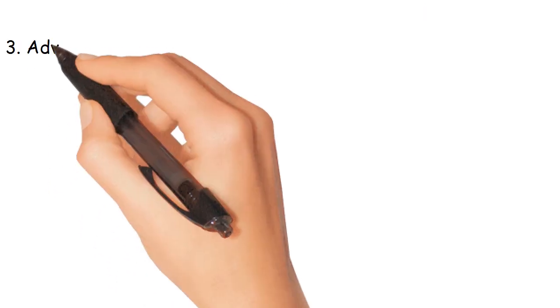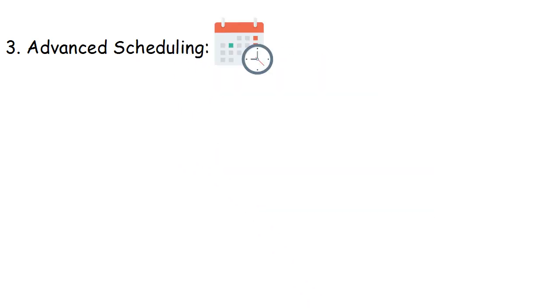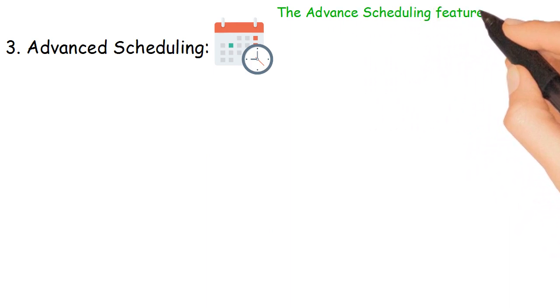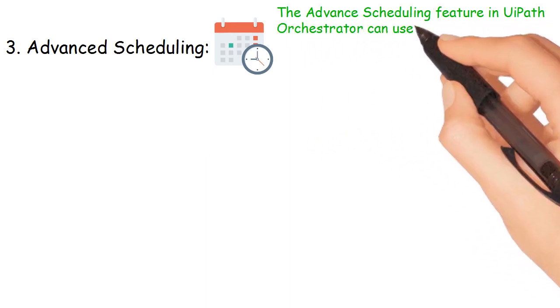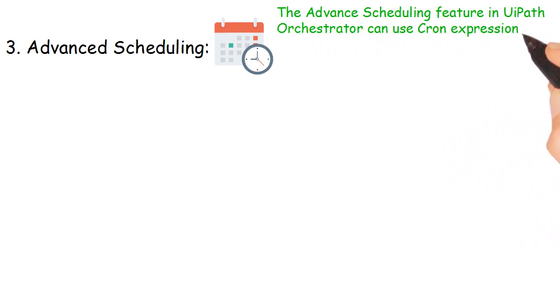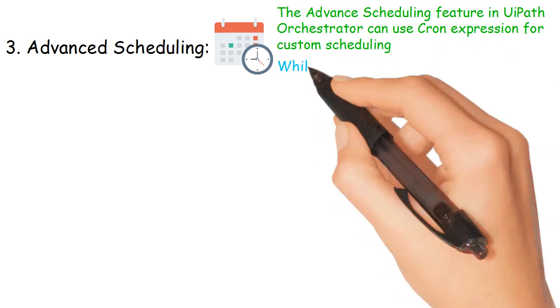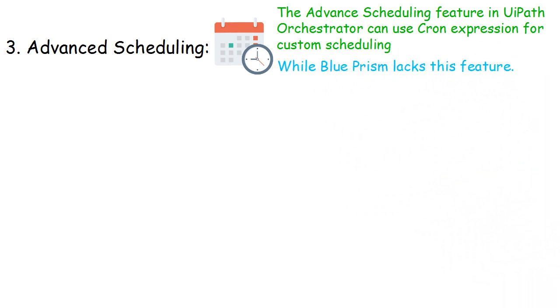Number 3: Advanced Scheduling. UiPath provides advanced scheduling — the advanced scheduling feature in UiPath Orchestrator can use cron expressions for custom scheduling, while Blue Prism lacks this feature.